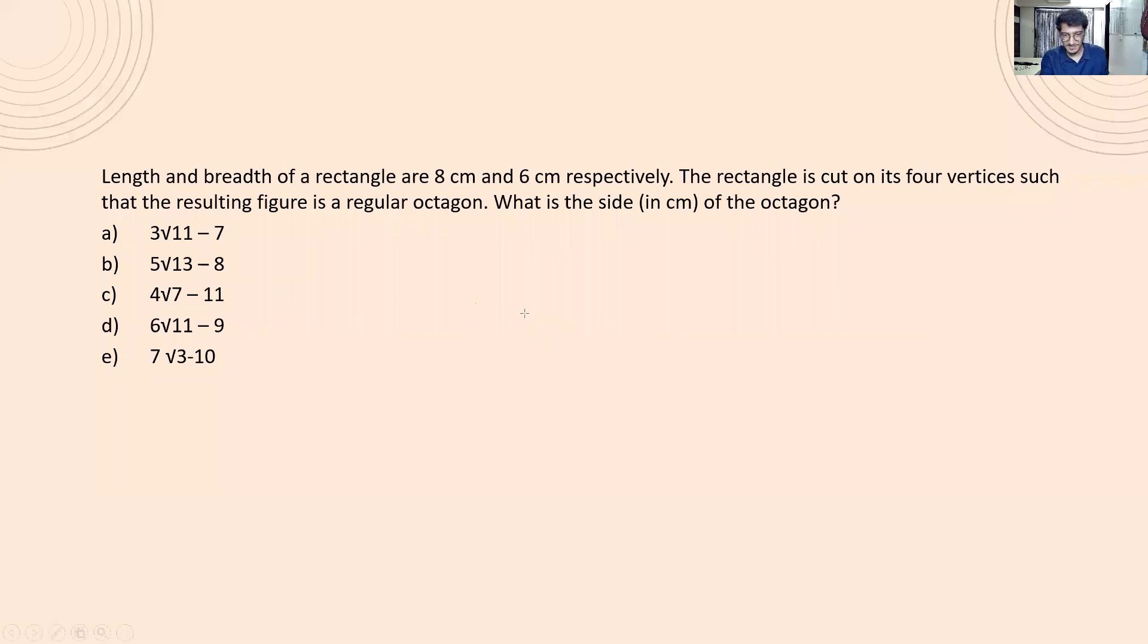This is a very interesting sum. My student had sent this to me and I also broke my head on this thinking how can this be possible. But then very much later I realized that the sum in itself is wrong. I'll tell you how. Here, what is given? Length and breadth of a rectangle are 8 centimeter and 6 centimeter respectively. The rectangle is cut on four vertices such that you form a regular octagon. The resulting figure is a regular octagon. What is the side in centimeter of the octagon?